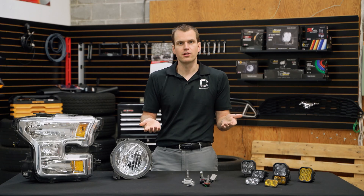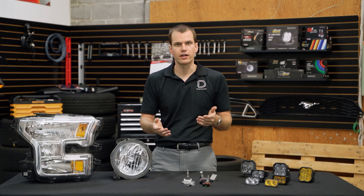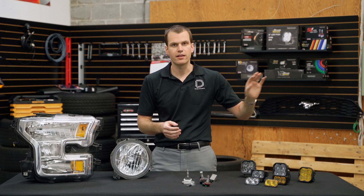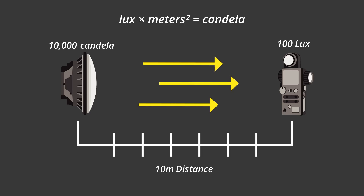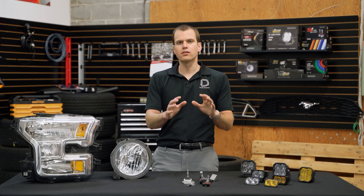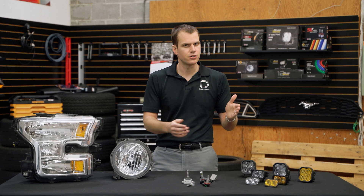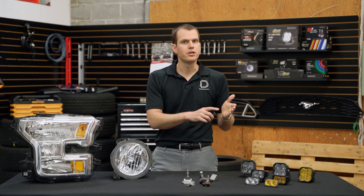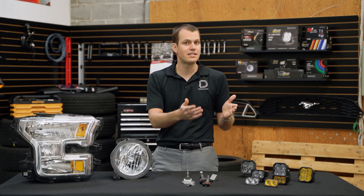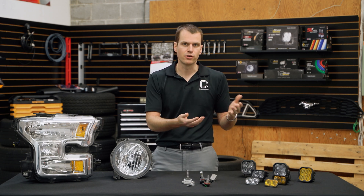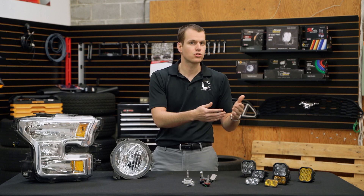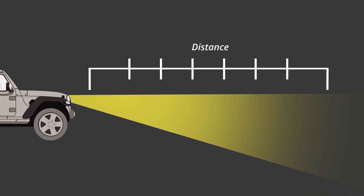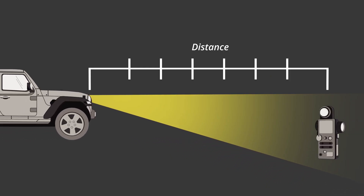There are calculators online where you can easily do the math and figure it out. If you know the candela, you know how far away that light could shine. For example, 10,000 candela at 10 meters away would equal 100 lux. That's important because if you see lux values online, they're probably just using a sensor to measure it, but you should always see the distance with that measurement. For example, 100 lux at 20 feet. If you don't know how far away it is, it's pretty worthless because the light will fall off the further you go.